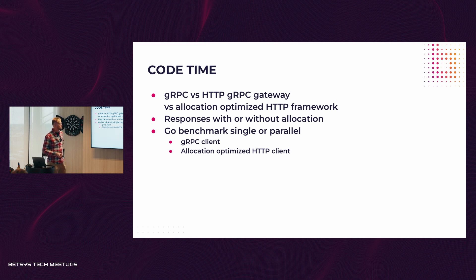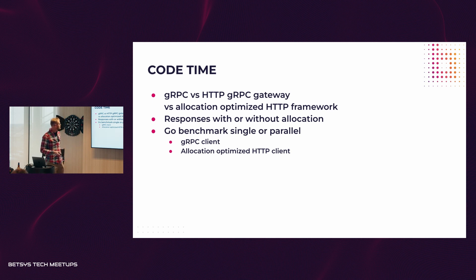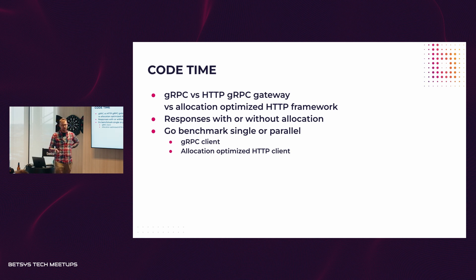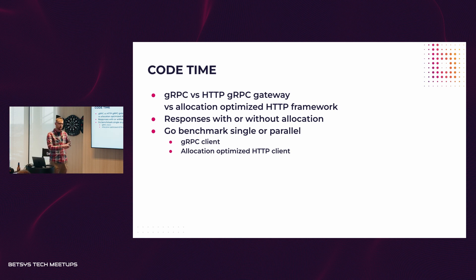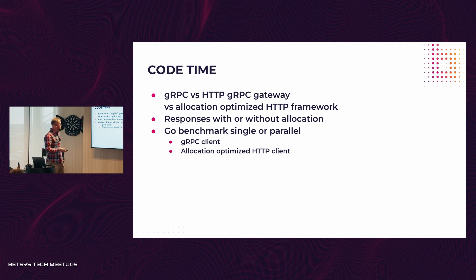Let's move to the actual benchmark of the whole solution together. I used the gRPC gateway which was auto-generated, and I made an allocation-optimized HTTP framework. I used two types of responses: one with allocation and one without. The benchmark itself is the classic Golang benchmark — one single-threaded and one parallel.